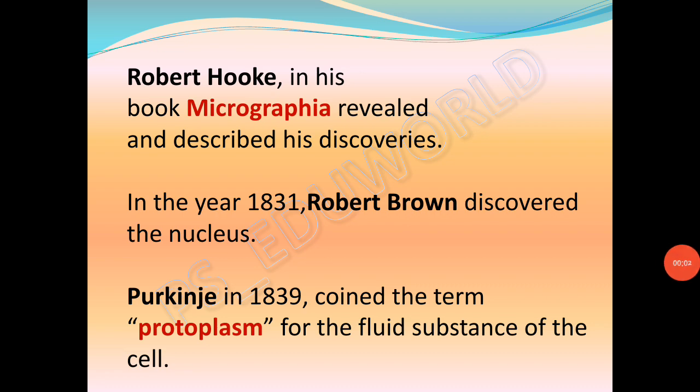Before we begin, some additional information for you all. Robert Hooke in his book Micrographia revealed and described his discoveries. In the year 1831, Robert Brown discovered the nucleus, and Purkinje in 1839 coined the term protoplasm for the fluid substance of the cell.